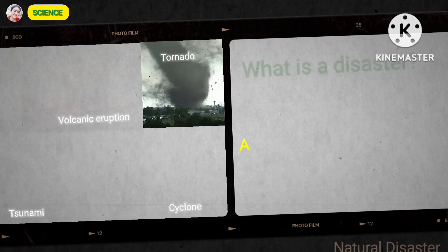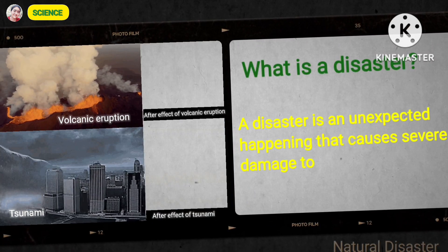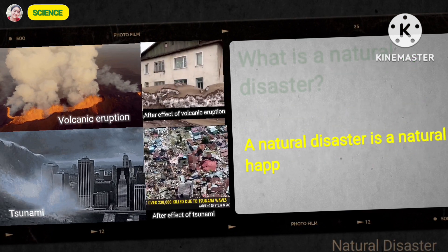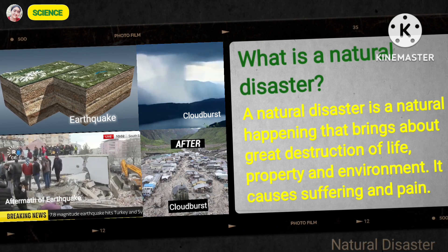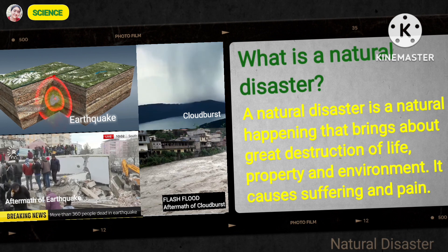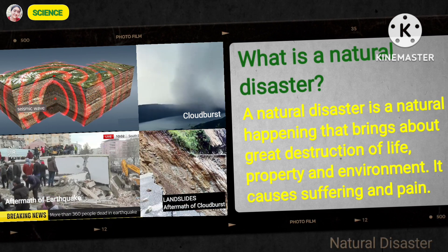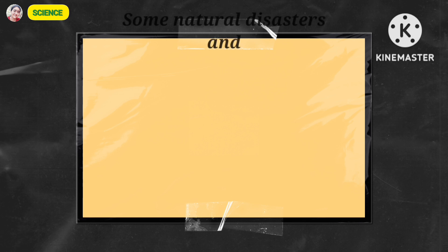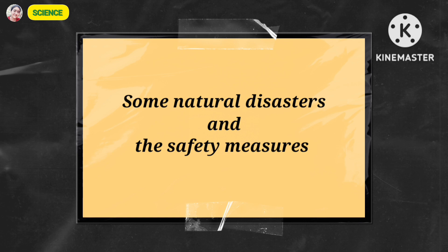A disaster is an unexpected happening that causes severe damage to property and even loss of life. A natural disaster is a natural happening that brings about great destruction of life, property and environment. It causes suffering and pain. Let's learn about some natural disasters and the safety measures to be taken to deal with them.